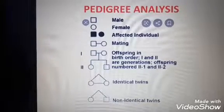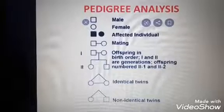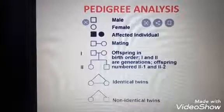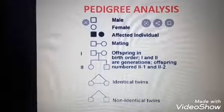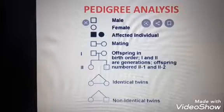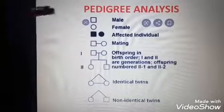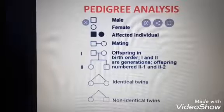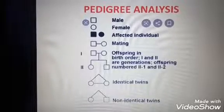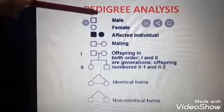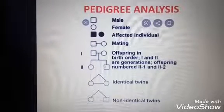Pedigree analysis is the record of occurrence of a trait in several generations of a family, mainly used for analyzing genetic disorders. A completely shaded symbol means affected; partially shaded means they are carriers of the disease. If a symbol is crossed, that means the individual — male or female — is deceased.